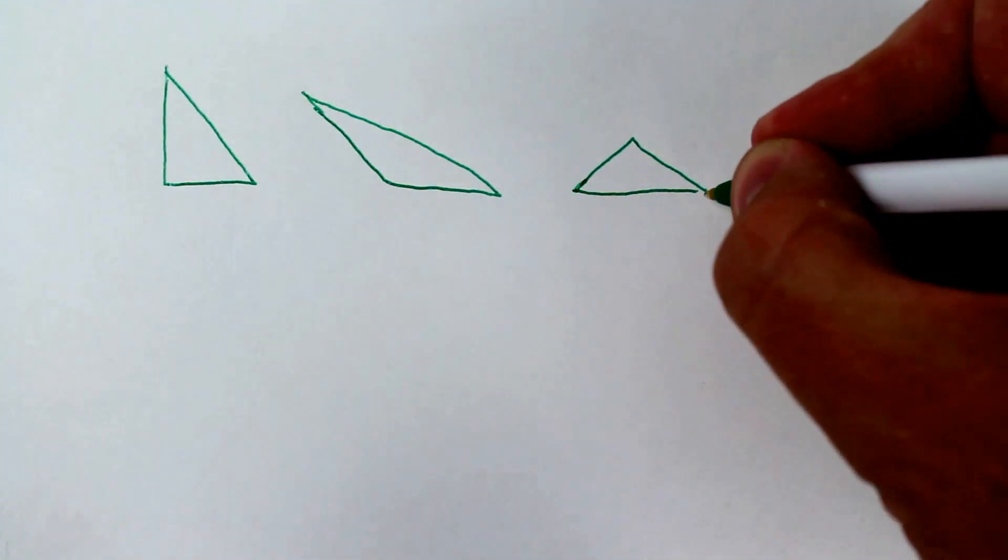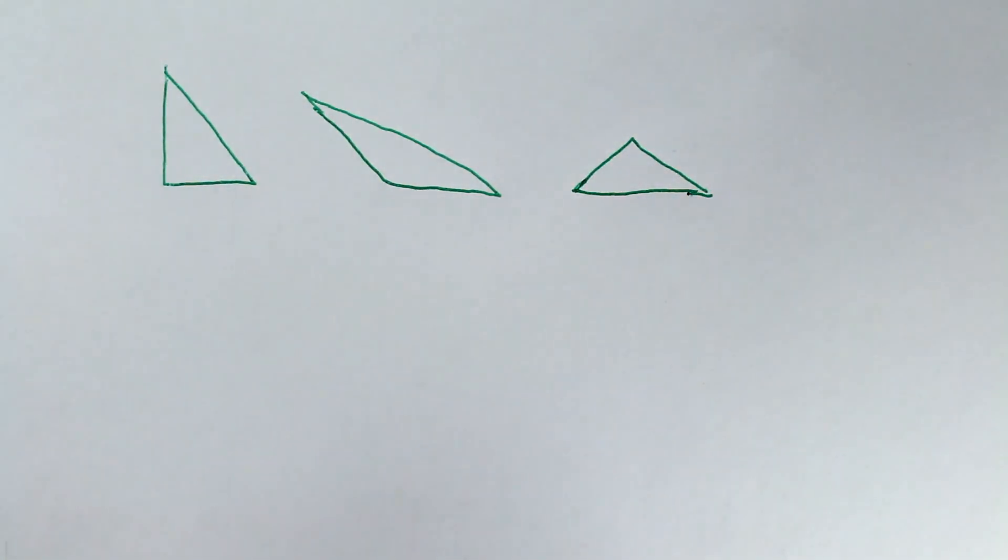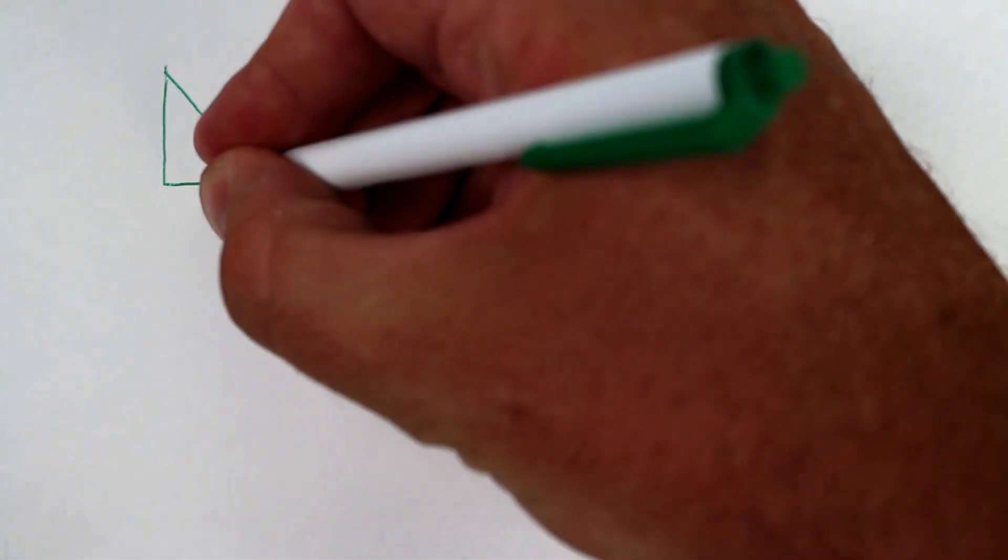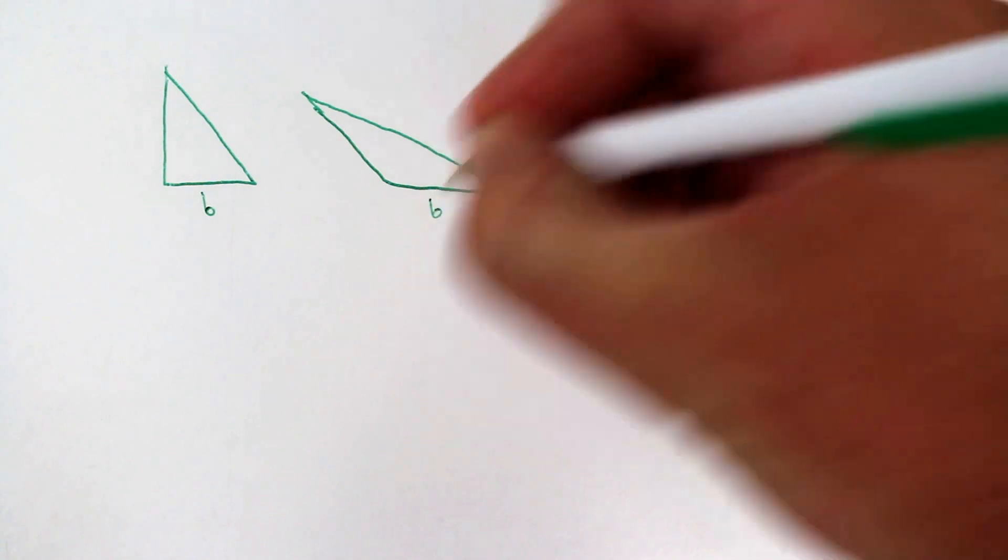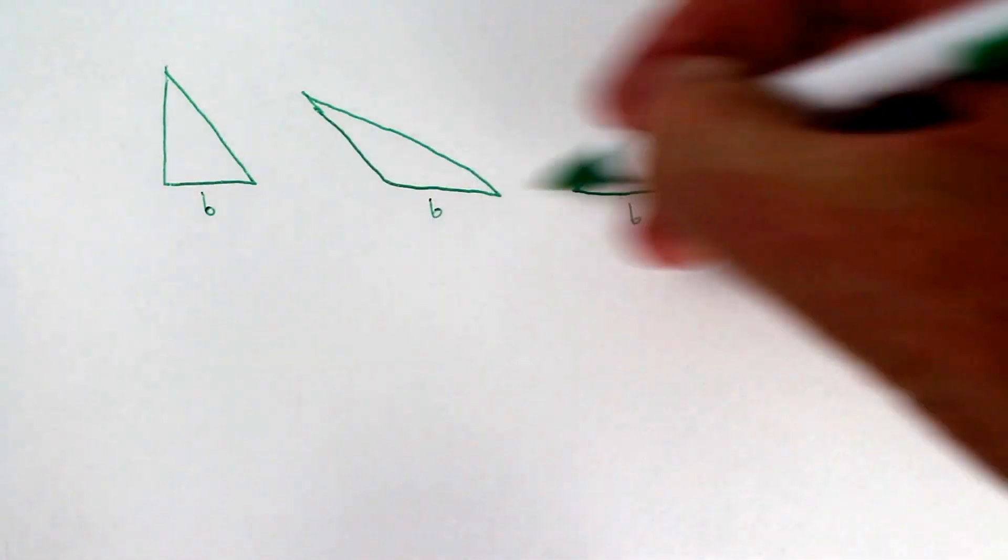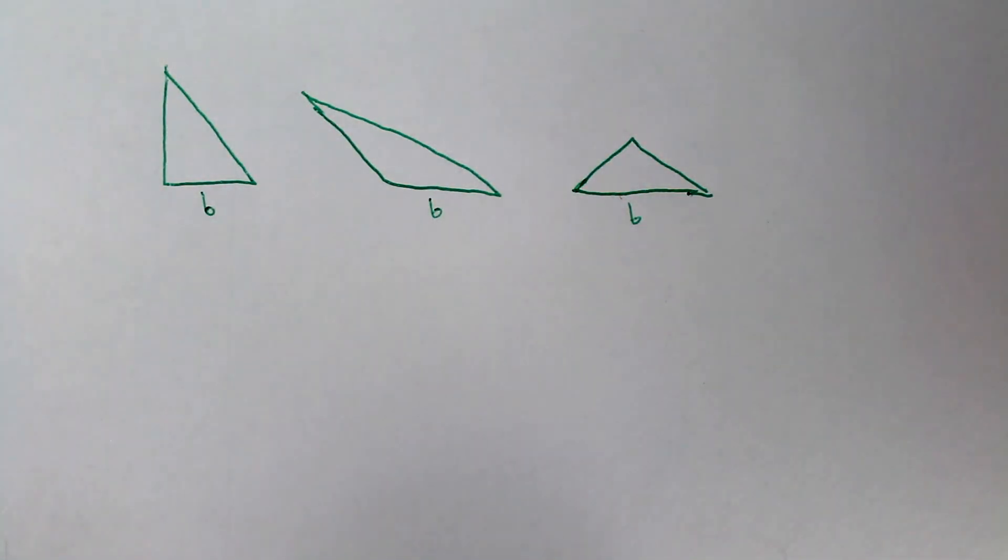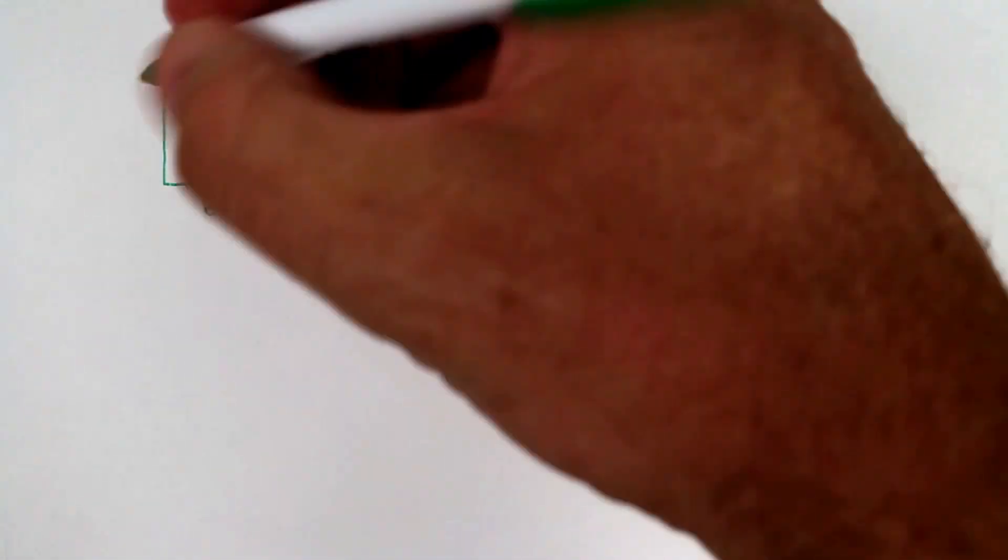So the base refers to any side of the triangle, but in these examples we're going to use the flat surface that the triangle sits on. And then the height is the distance from the base to the highest point of the triangle.